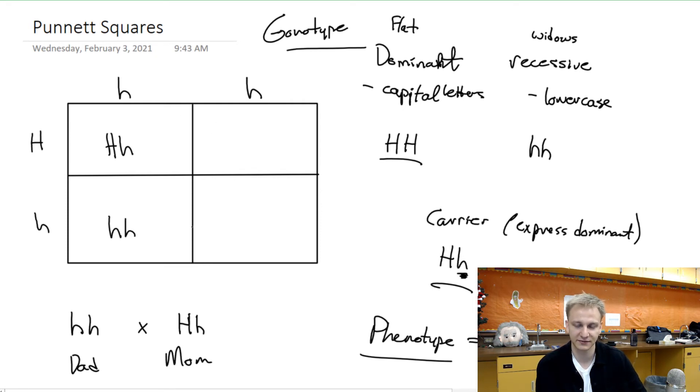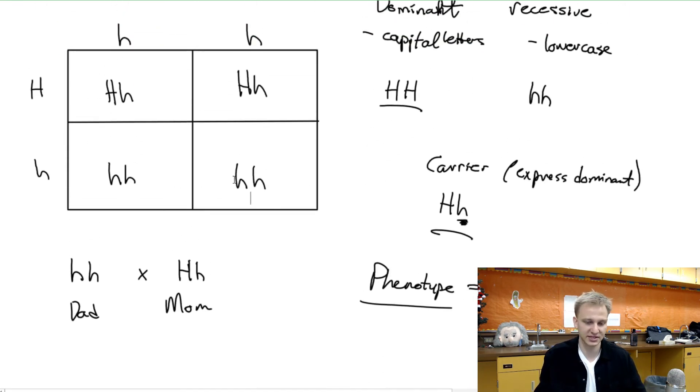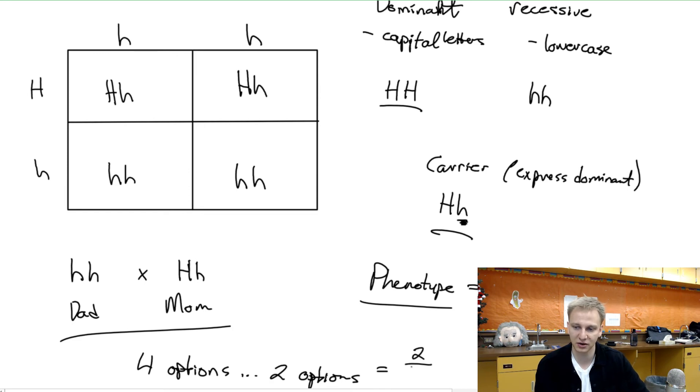In the bottom left, lowercase lowercase, we'd have capital H lowercase h, lowercase h lowercase h. And what we can see from this table here then is that we have four options, but realistically we only have two options because they're the same. Okay, so there's four boxes we filled in, but the top two are the same and the bottom two are the same.